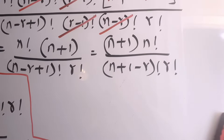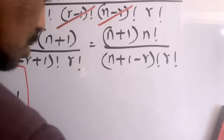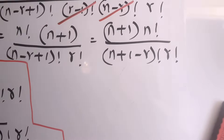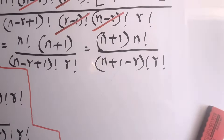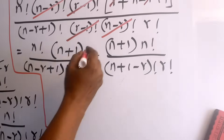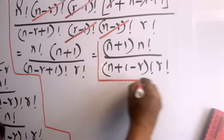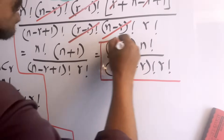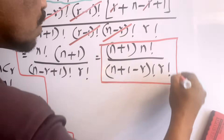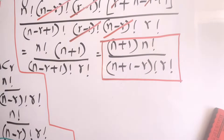I'll put a box around this simplified left-hand side result. This is the most simplified form we can reach, so now we proceed to evaluate the right-hand side.